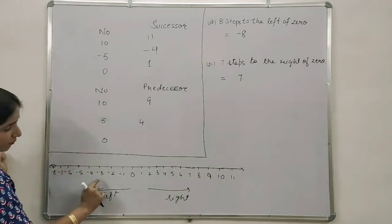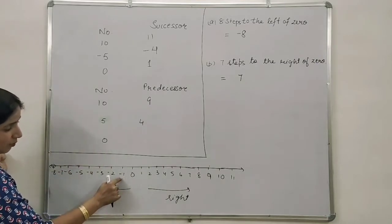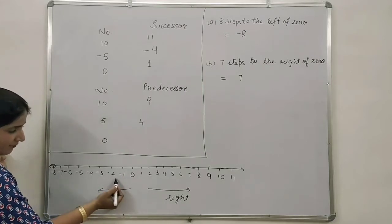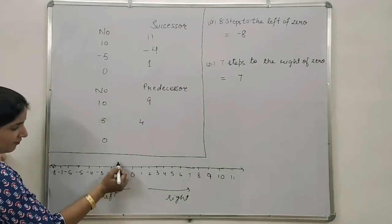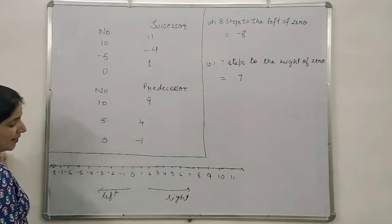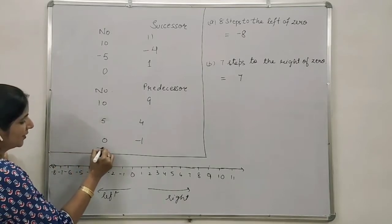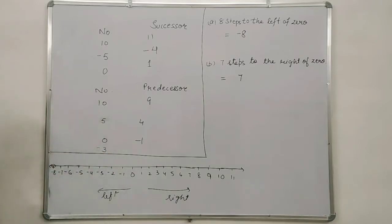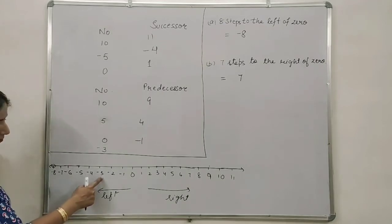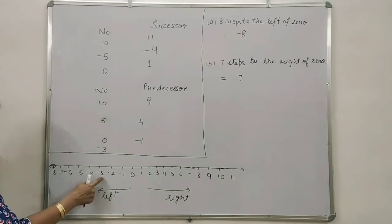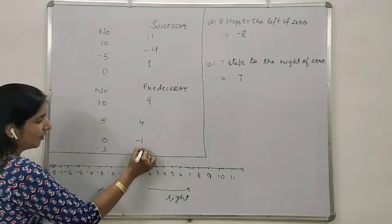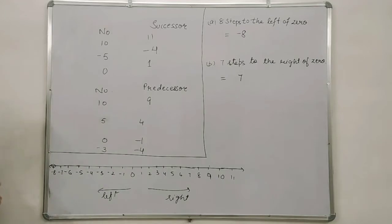Similarly, what will be the predecessor of 0? Again, we have to move towards the left. If we move towards the left, we will reach minus 1. So, minus 1 is the predecessor of 0. Now, suppose it is minus 3 — what will be the predecessor of minus 3? Again, towards the left. When we go left, the number is minus 4. So, one step towards the left gives us the predecessor, which is minus 4.